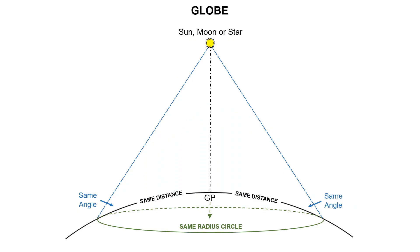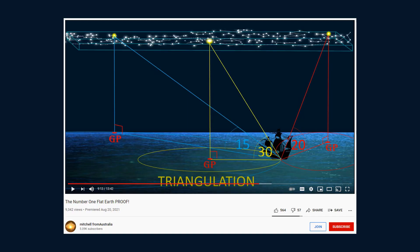And again, just like it was on the flat Earth, in the case of the Sun, Moon, or star, this would form a circle of the same radius on the surface of the Earth. And any position along that circumference would be the exact same distance from the ground position.